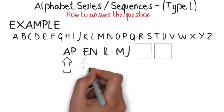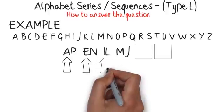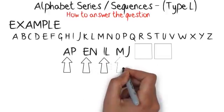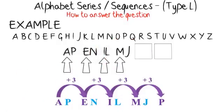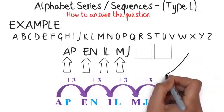Now look at the first letters of all the pairs: A-E-I-M. Use the alphabet to count on from the first letter to the second letter and so on. By working with the first letters and the alphabet, you can see that the pattern is moving through the alphabet three letters at a time. Now you should mark this down on your sequence.